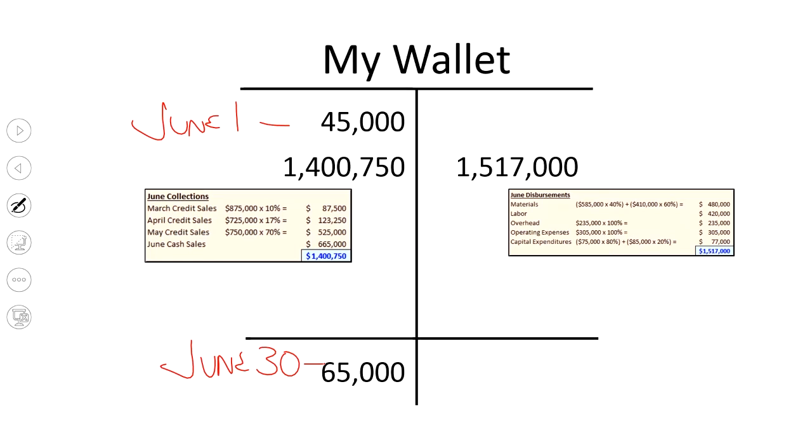Now, it could be that there's an arbitrary minimum, where the company says we never want to have less than 50. Or it could be, we want to have enough to meet certain cash commitments that we know are coming in July. Don't worry about that. For the sake of this problem, let's just assume that's the number you were given. So now we just have to go through and figure out what am I spending and what am I receiving.